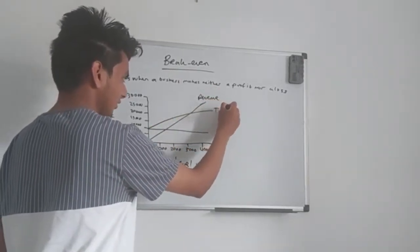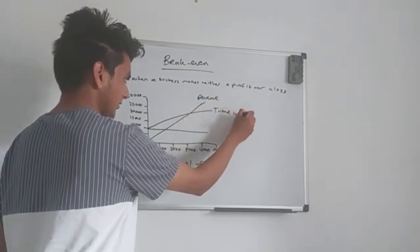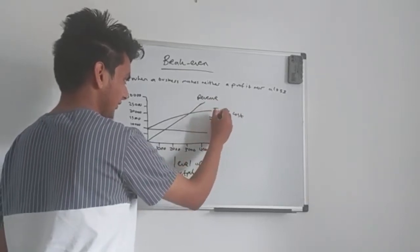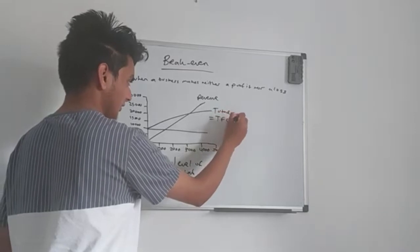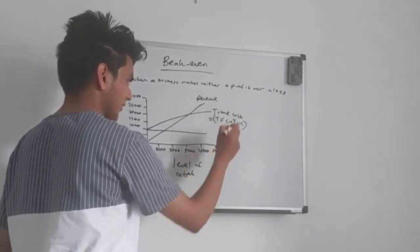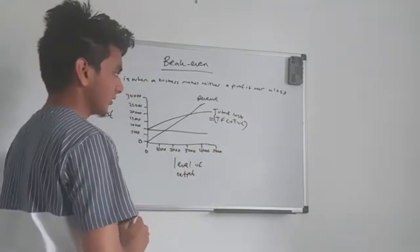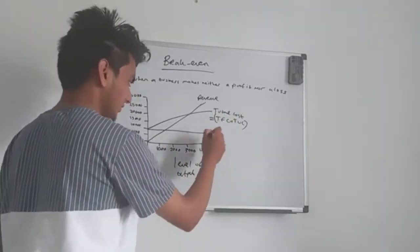This is the total costs, which is total fixed costs plus total variable costs. So that's the formula for the total cost: total fixed costs, total variable costs.